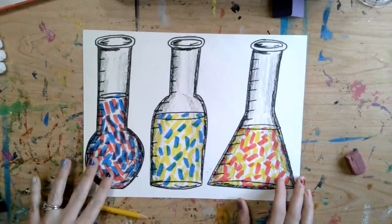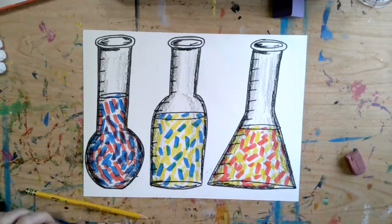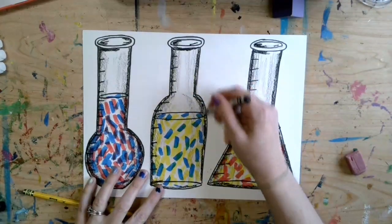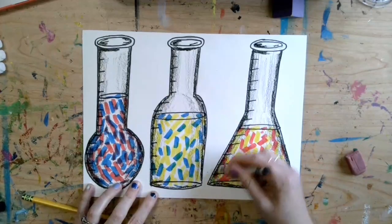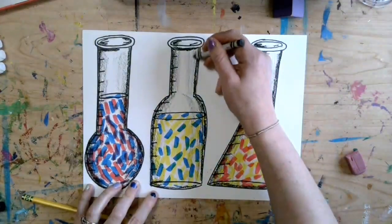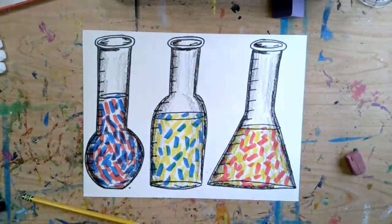So once you're done adding your value to your beakers, we are going to do our chemical reaction experiment. So what you're going to need is a cup of water and a paintbrush.